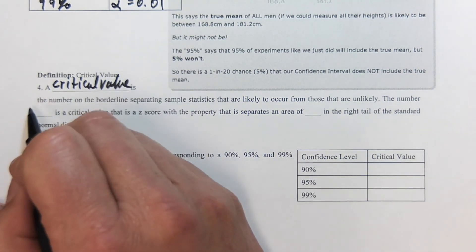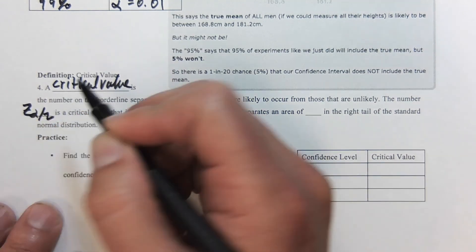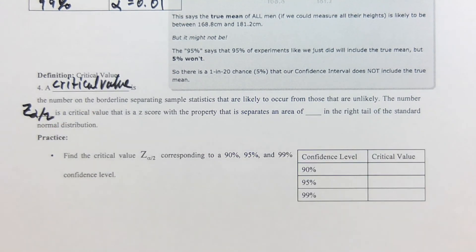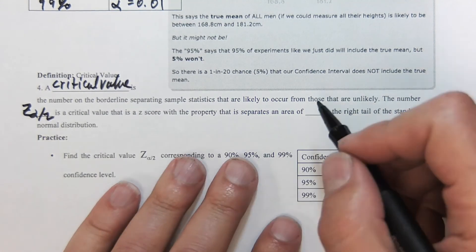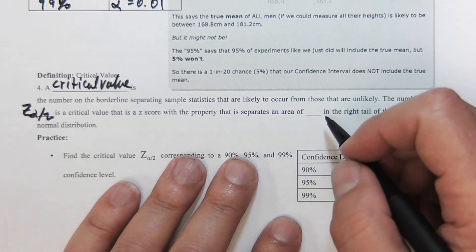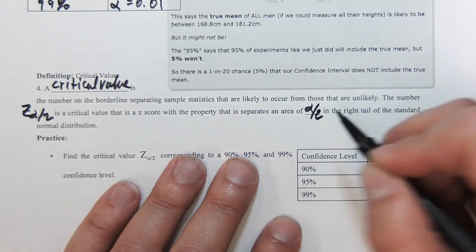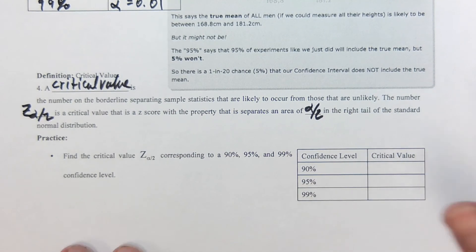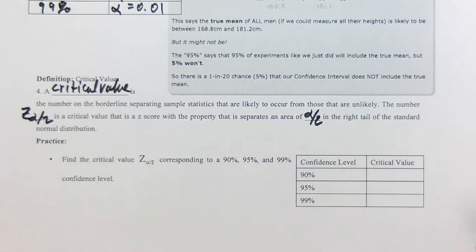The number Z sub alpha divided by 2 is a critical value that is a Z score with a property that separates an area of alpha over 2 in the right tail of the standard normal distribution.